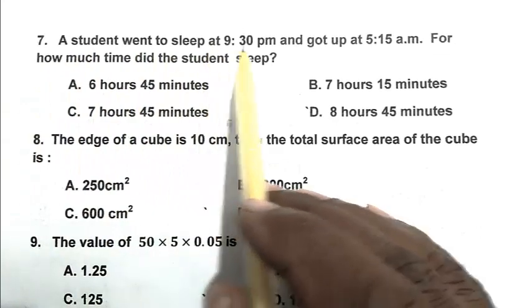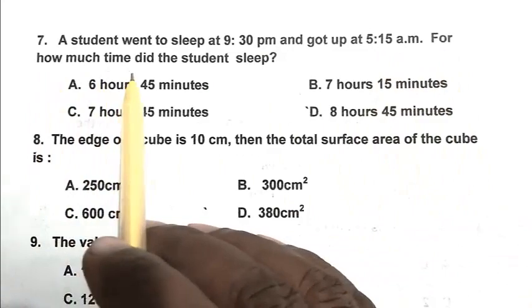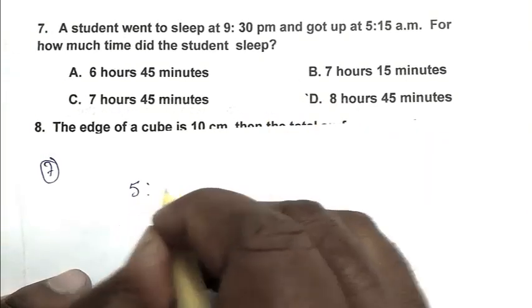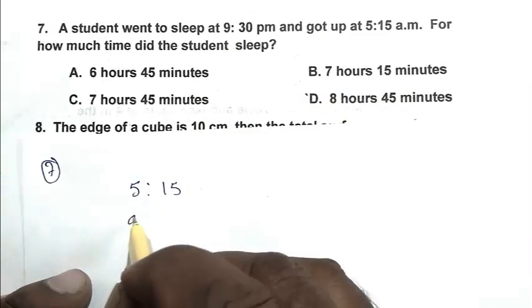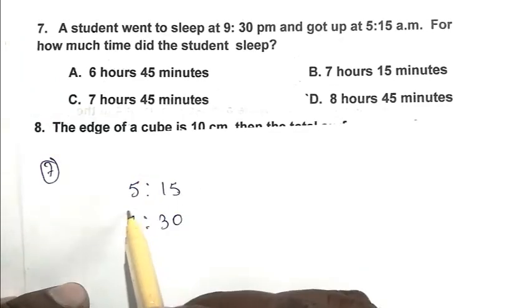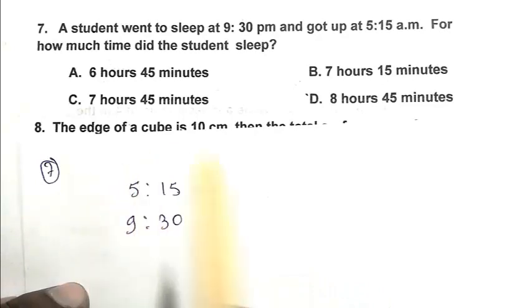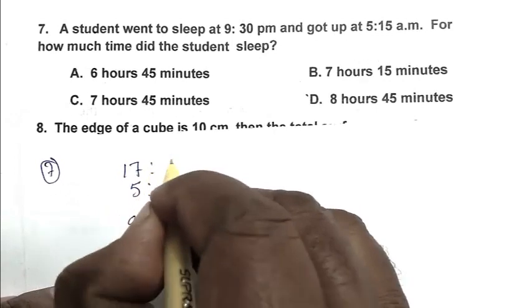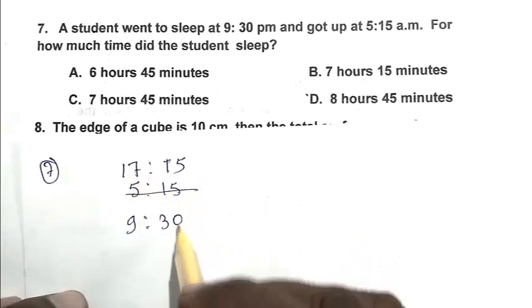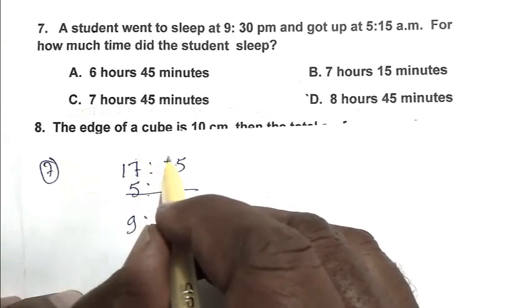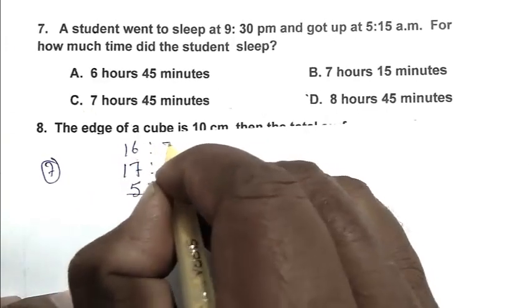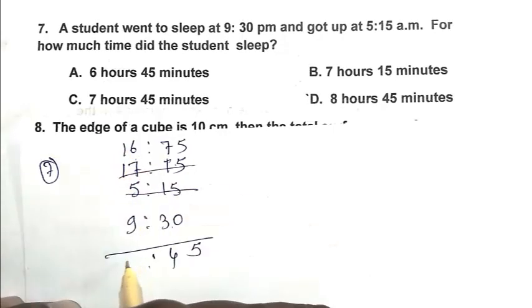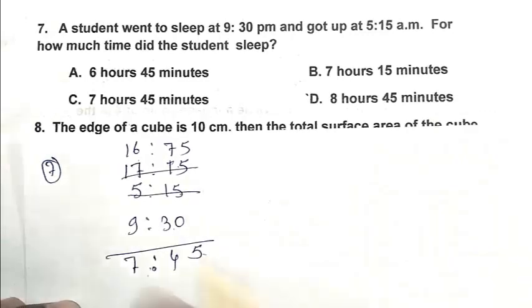Question number 7: A student got up at 5:15 a.m. and slept at 9:30 p.m. Calculate the difference of these two. During his sleep the clock covers 12 o'clock midnight, so we add 12 hours to 5:15 a.m., making it 17:15. Since 15 minutes is smaller than 30, we transfer 1 hour to the minutes side, giving 16 hours 75 minutes. Getting the difference, we get 7 hours 45 minutes. So C is the right answer.